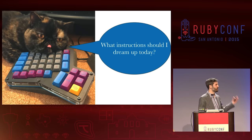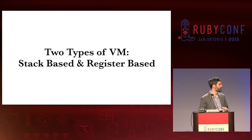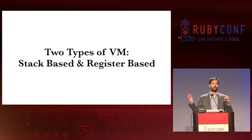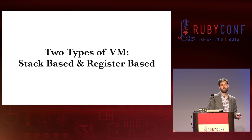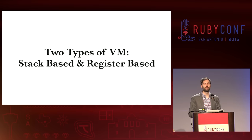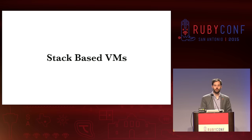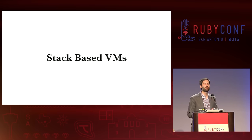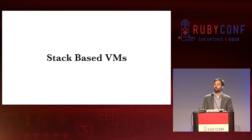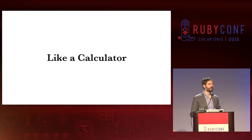There are two types of virtual machines: stack-based and register-based virtual machines. You should go look up register-based virtual machines on Wikipedia later. We're only going to talk about stack-based VMs because that's what Ruby's virtual machine is. Ruby's virtual machine is a stack-based VM. A stack-based VM is very much like a calculator.